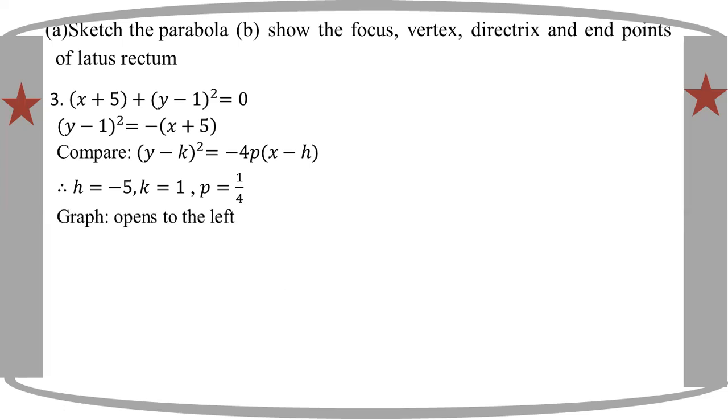Vertex. Vertex is the origin of x, k: minus 5, 1.